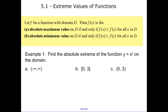Today we're going to be talking about extreme values of functions. We have an absolute maximum value on an interval within our domain if and only if the function value at f of c, where we're going to have our maximum, is greater than every other point around it. And we have a minimum where f of c is less than every other number around it.